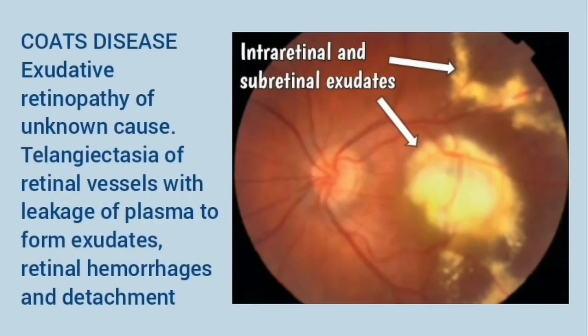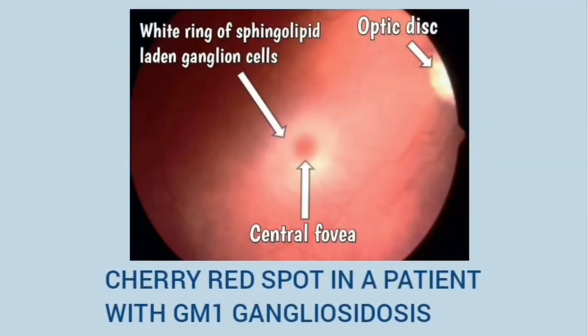This is Coats disease. It is an exudative retinopathy of unknown cause; usually boys are affected. There is telangiectasia of the retinal vessels with leakage of plasma to form exudates, retinal hemorrhages, and detachment.